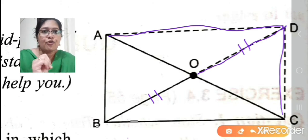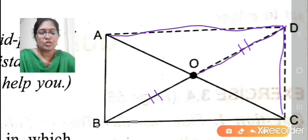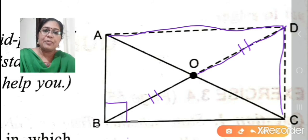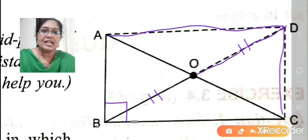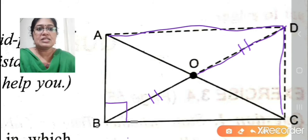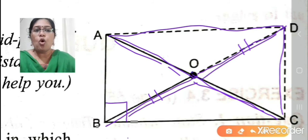We now have a quadrilateral ABCD where opposite sides are equal and parallel — so ABCD is a parallelogram. Since angle B is 90 degrees, this parallelogram can be considered a rectangle. Since the diagonals of a rectangle bisect each other, OA equals OB equals OC — so O is equidistant from A, B, and C.